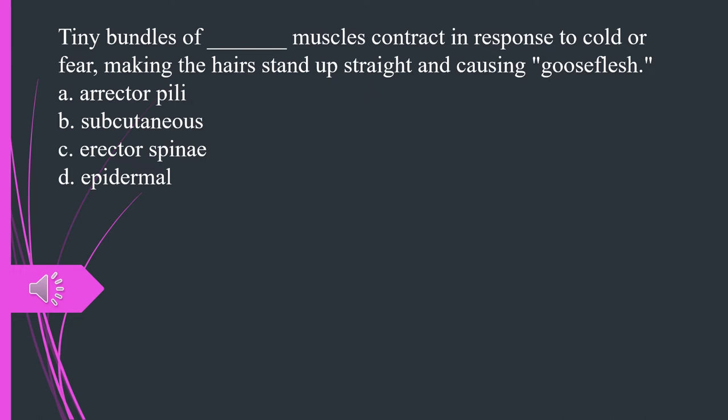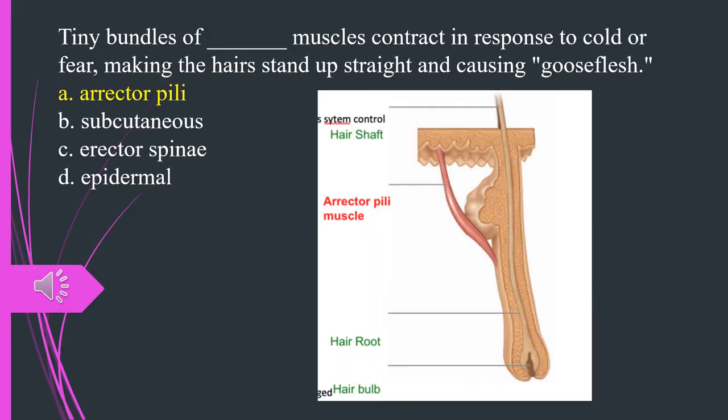Tiny bundles of what muscles contract in response to cold or fear, making the hairs stand up straight and causing gooseflesh? A. Erector pili. B. Subcutaneous. C. Erector spinae. D. Epidermal. The answer is A. Erector pili.